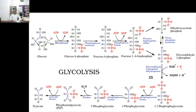Each reaction in the glycolytic pathway is catalyzed by a specific enzyme or enzyme complex. Recent studies suggest that some glycolytic enzymes are multifunctional proteins. For instance, hexokinase, glyceraldehyde-3-phosphate dehydrogenase (GAPDH), and enolase have been implicated in transcriptional roles. Hexokinase and GAPDH may regulate apoptosis, and glucose-6-phosphate isomerase can affect cell motility.